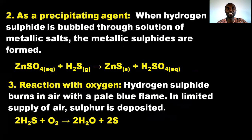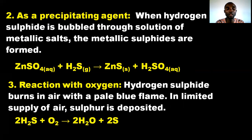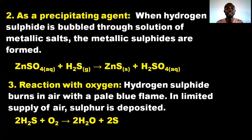Hydrogen sulfide also acts as a precipitating agent, which we use for analysis in the lab. When hydrogen sulfide is bubbled through a solution of a metallic salt, the metallic sulfide is formed. For example, when hydrogen sulfide is bubbled through zinc sulfate solution, zinc sulfide is formed along with the corresponding acid.